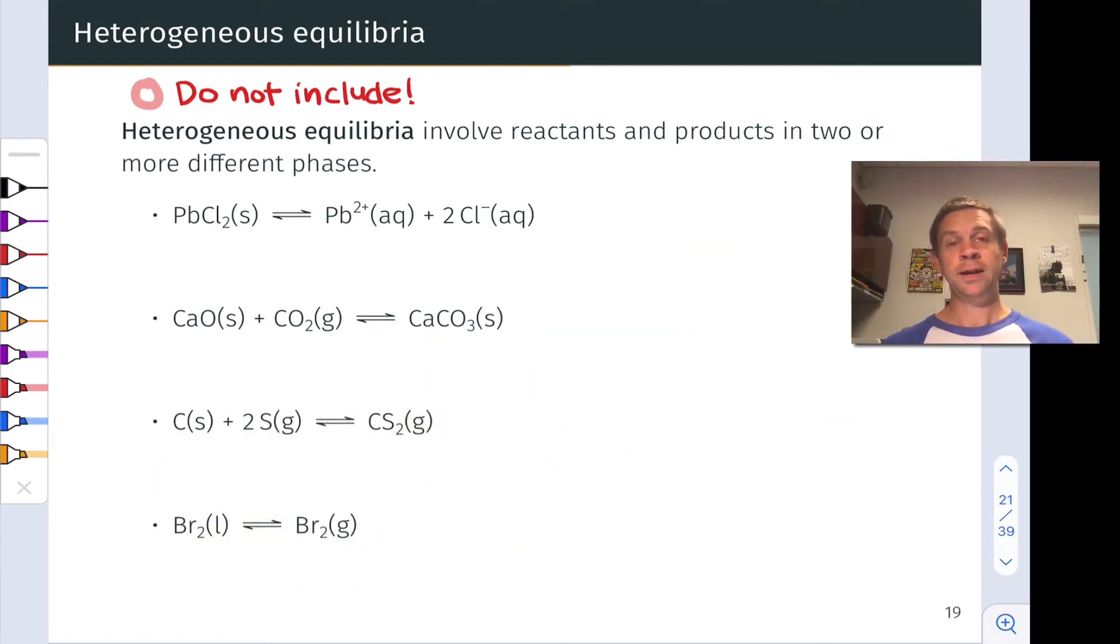Heterogeneous equilibria involve reactants or products in multiple phases, two or more phases. Maybe an aqueous solution together with a solid, something like a precipitation reaction. Maybe a solid and a gas, something like heating a solid to drive off water, something like this.